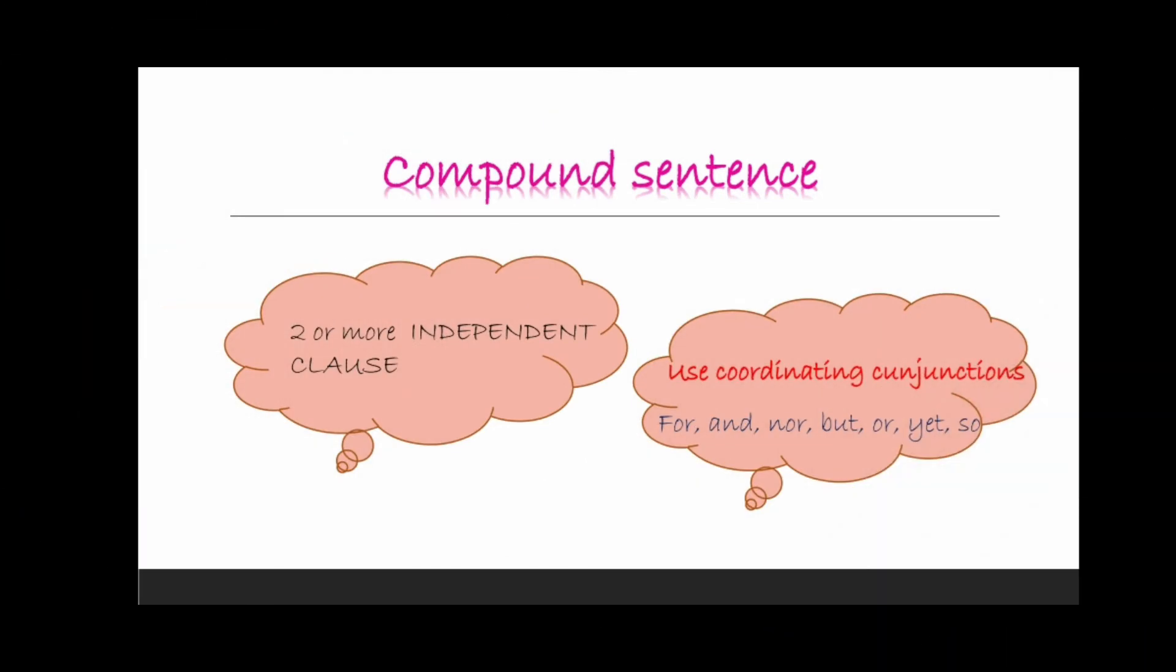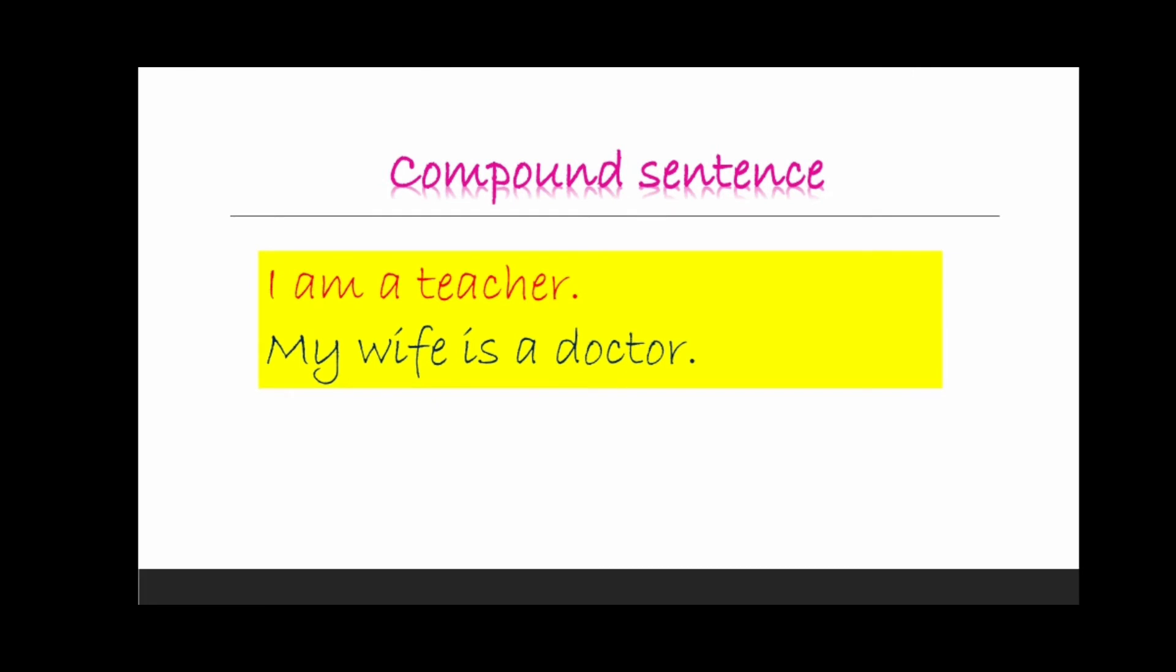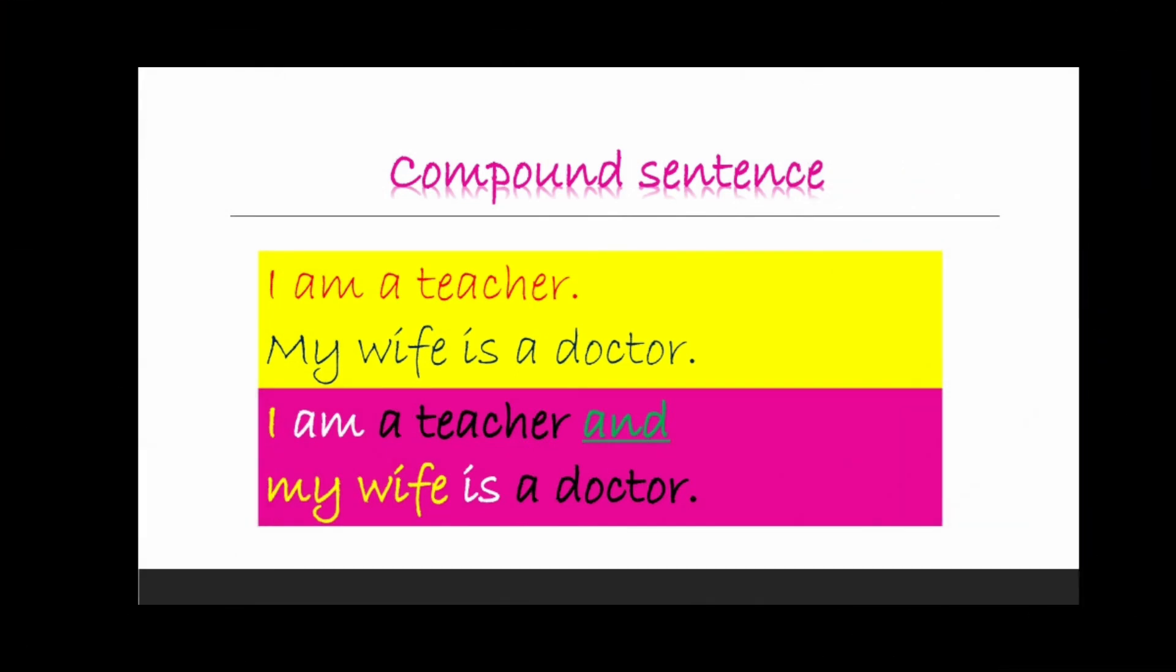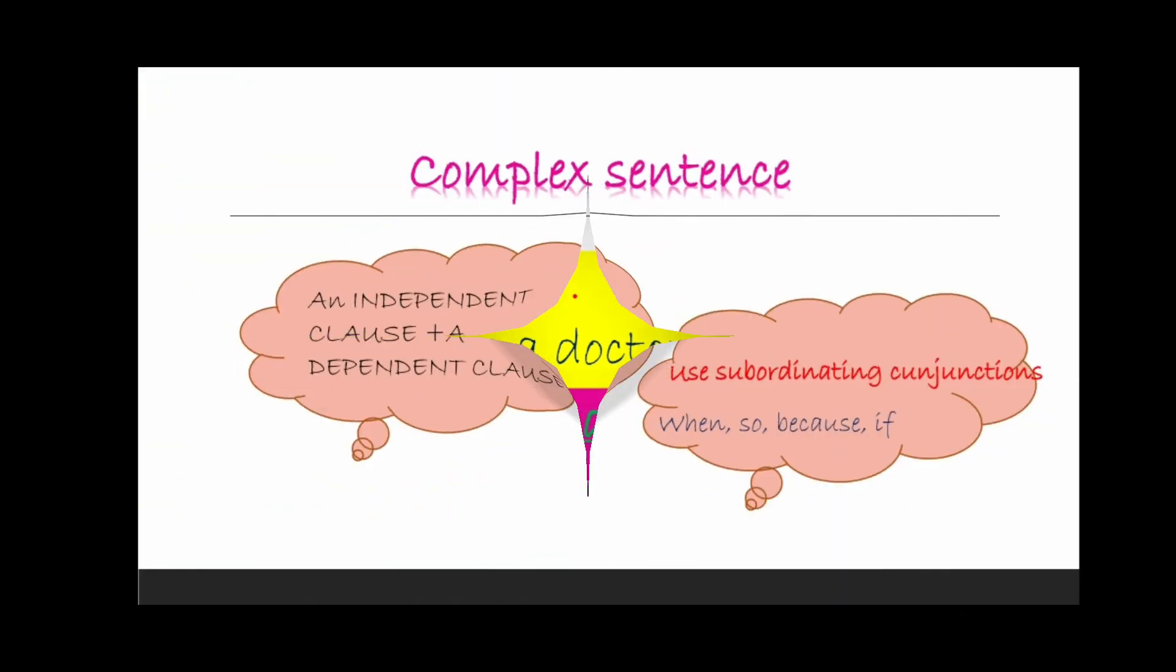The next one is compound sentence. In a compound sentence we will be having two or more than two independent clauses and we will use coordinating conjunction to combine these types of sentences. Let us go through the example. Here we have I am a teacher, my wife is a doctor. Now we have two sentences, two different independent clauses, and if we combine them using conjunction then it is going to be converted into a compound sentence like I am a teacher and my wife is a doctor. Now this makes a compound sentence and if we try to split it again we can do so by just removing and.